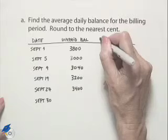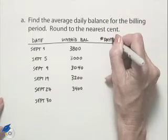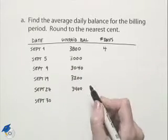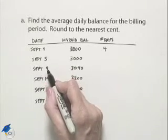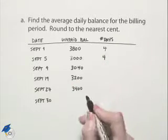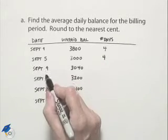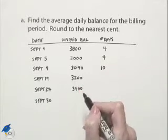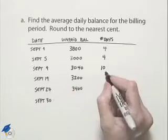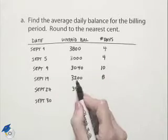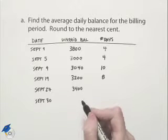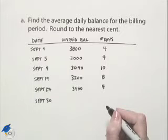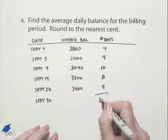Now let's figure out the number of days we had each unpaid balance. From September 1st through 5th, that's 4 days with an unpaid balance of $3,800. From the 5th through the 9th, that's 4 days at $3,000. From the 9th through the 19th, that's 10 days at $3,040. From the 19th to the 27th, that's 8 days at $3,200. From the 27th through the 30th, that's 4 days at $3,400. Adding those together gives us 30 days total.